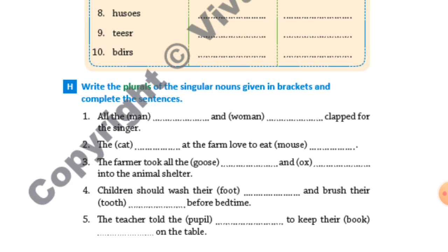Fifth one: 'The teacher told the ___ [pupil] to keep their ___ [book] on the table.' Plural of pupil is 'pupils' and plural of book is 'books'. I hope you all are enjoying this lecture. Thank you.